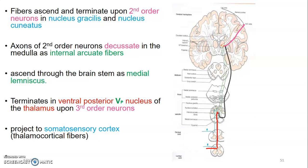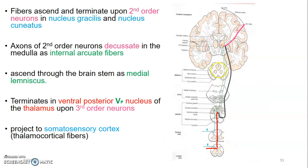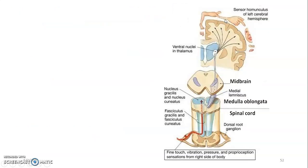At the thalamus, the second-order neuron synapses with the third-order neuron, which ascends to the somatosensory cortex of the cerebrum. That is the medial lemniscal pathway. From the medulla it ascends through the pons and the midbrain as the medial lemniscus, reaching the thalamus, then projecting to the primary somatosensory cortex.